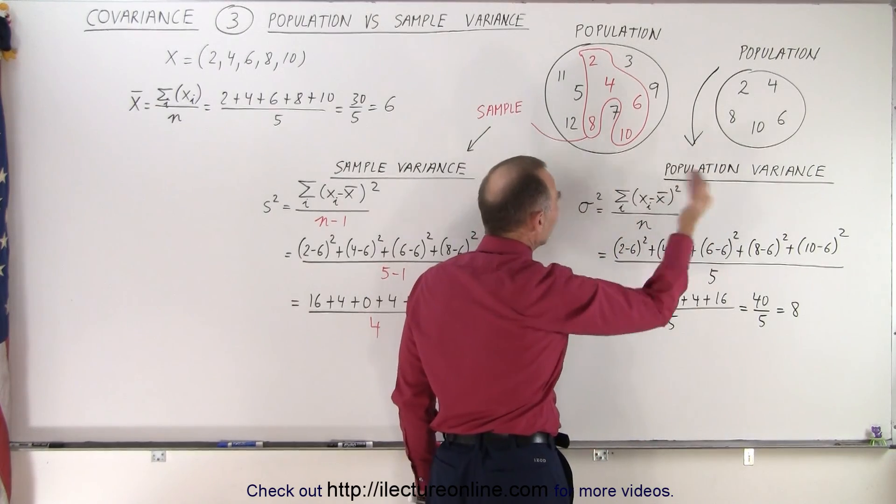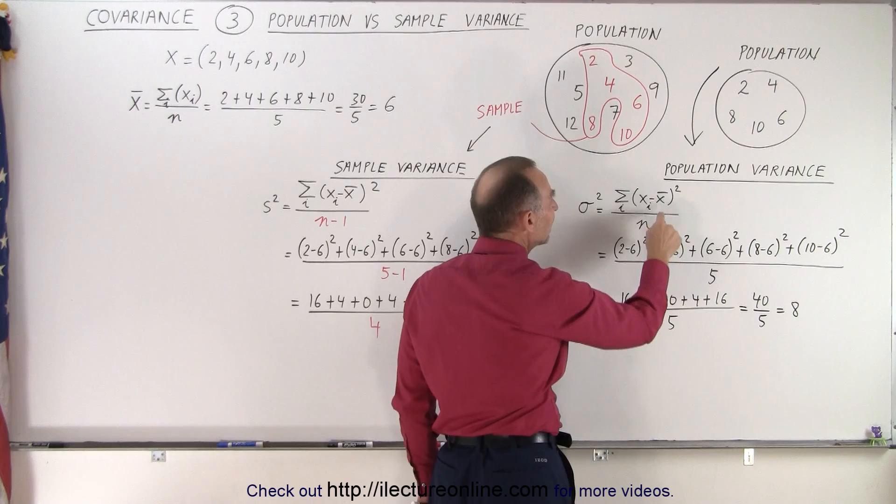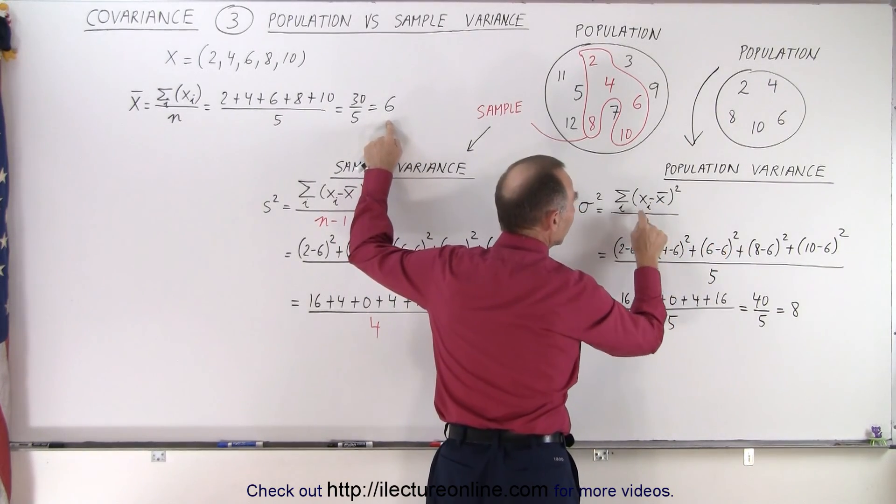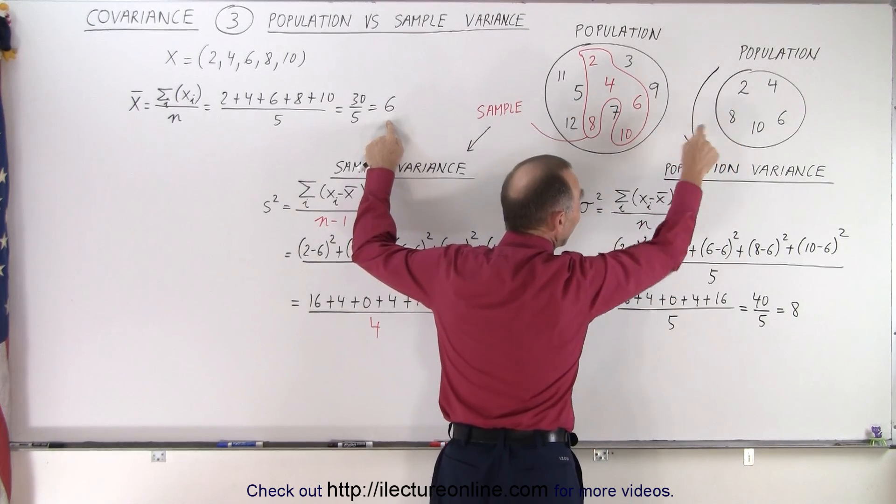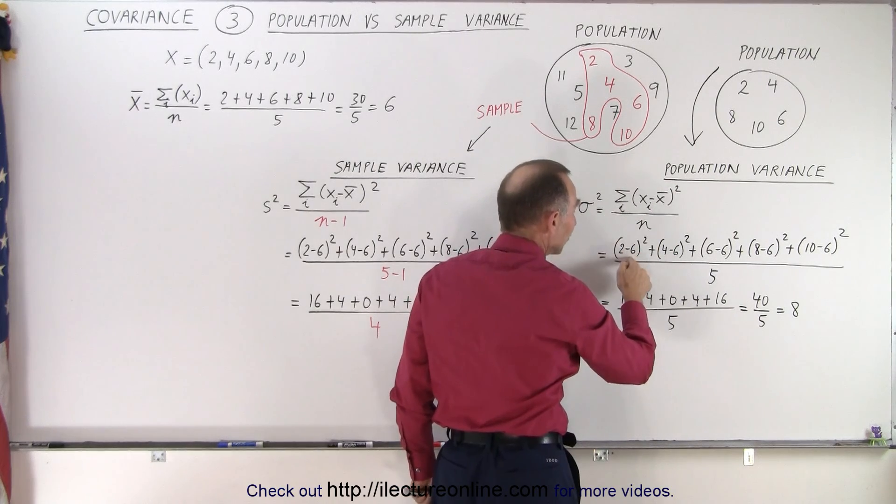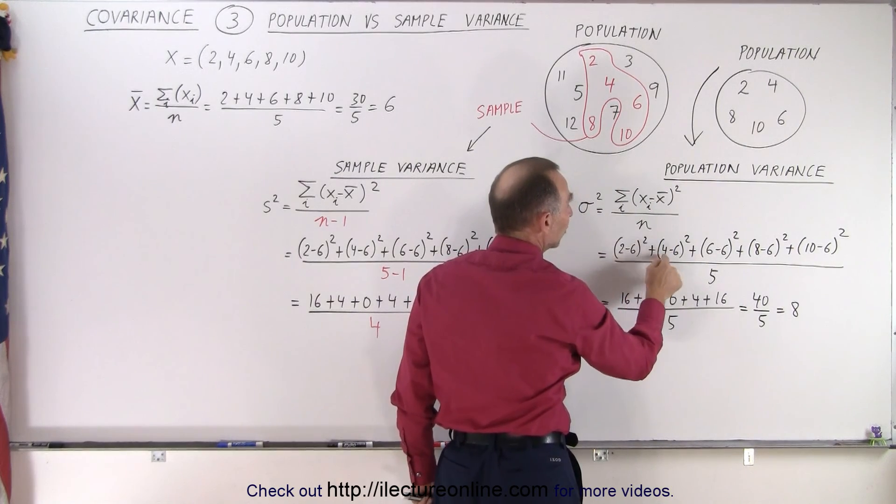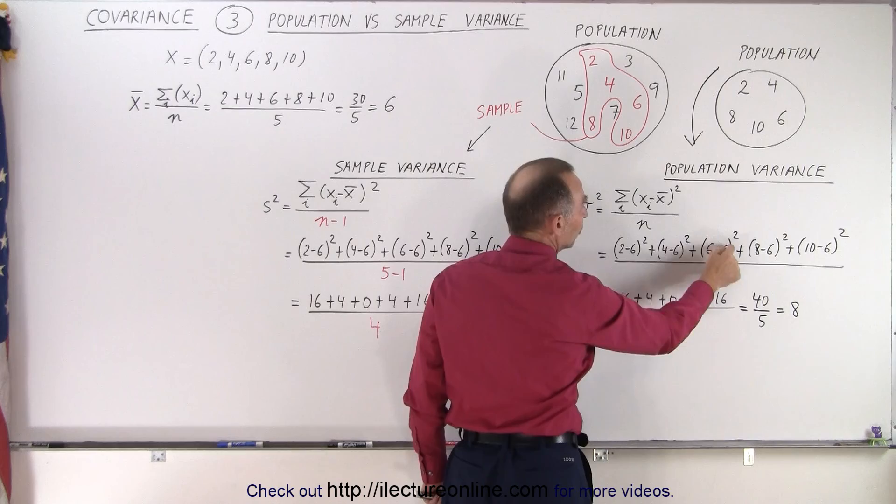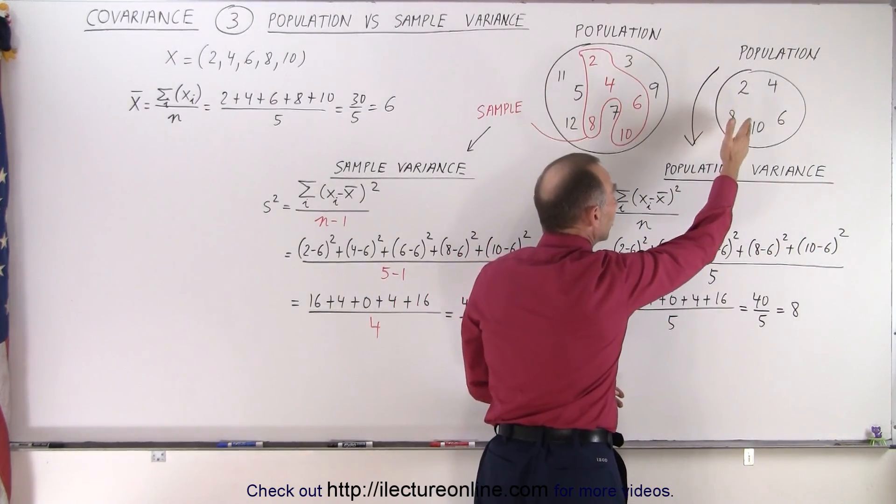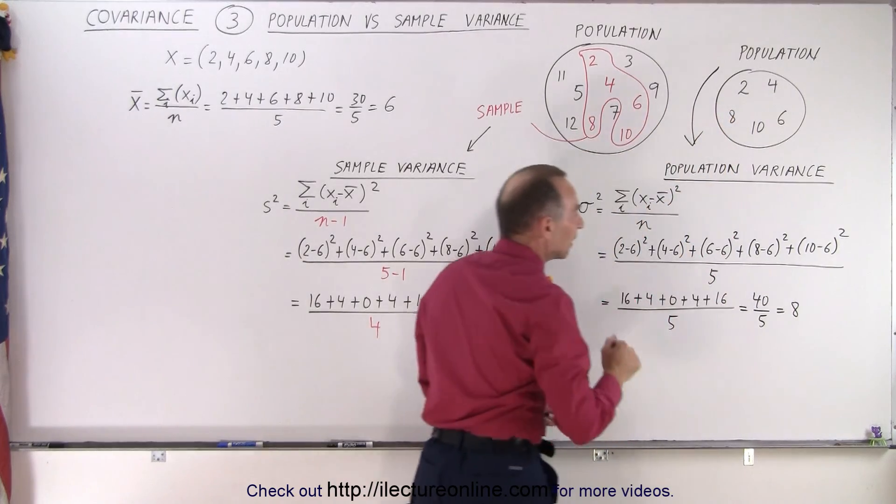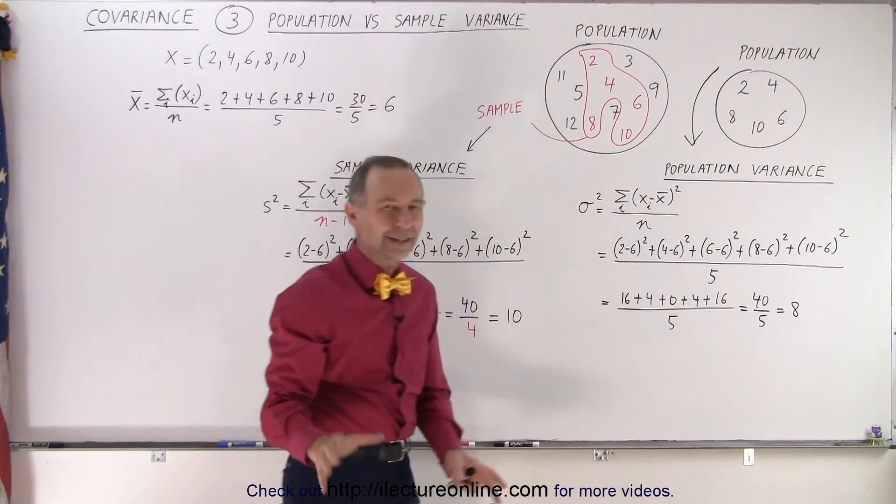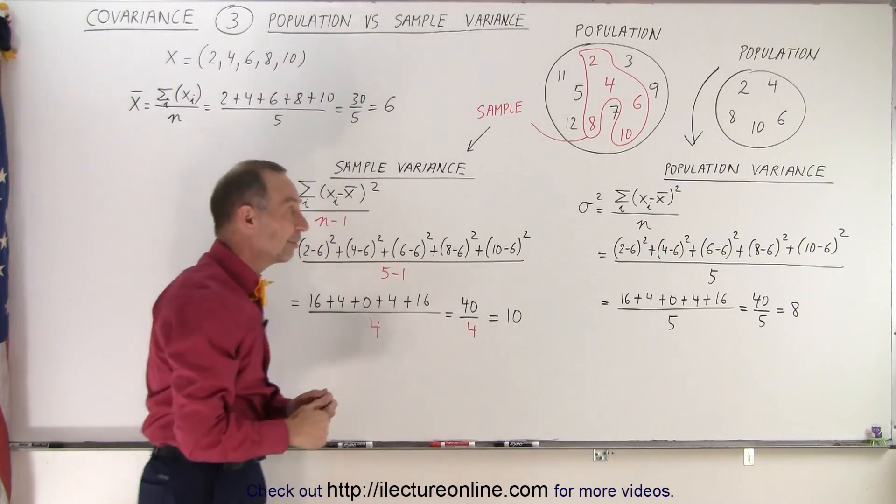And so we're calculating the variance the same way as before. We take the average value, which we found over here, and we use that in each one of the calculations. We take the difference between each of the five numbers, 2 minus 6, 4 minus 6, the difference between the number and the average. So 2 minus 6 squared, 4 minus 6 squared, 6 minus 6 squared, 8 minus 6 squared, and 10 minus 6 squared. And we divide it by the total number of numbers in our population. So we end up with 40 divided by 5, for a variance of 8. That's the same number we found in a previous video.